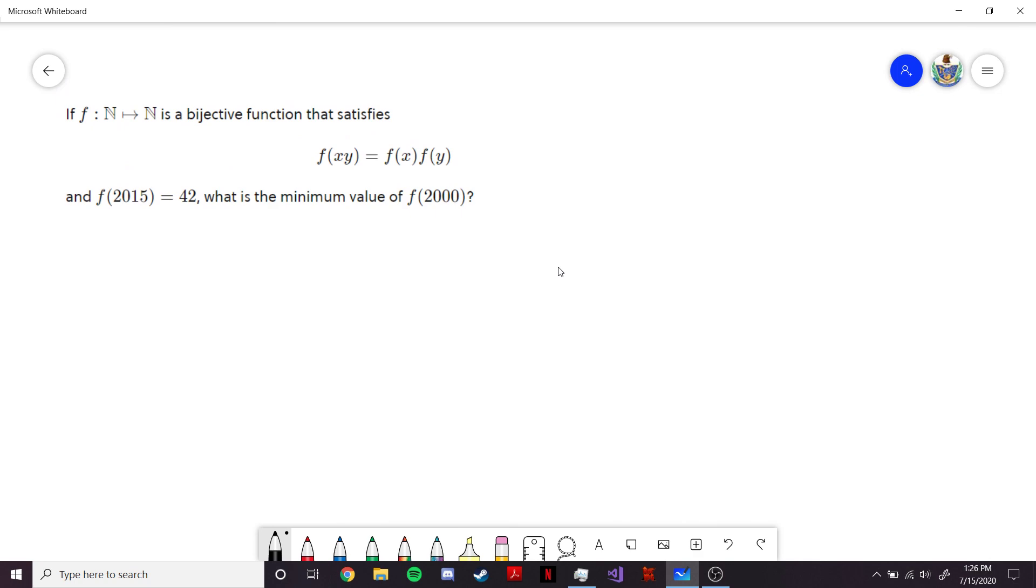So an arithmetic function just takes inputs in the natural numbers. And so here we're given a function from the natural numbers to the natural numbers. And we're given that it's bijective, which means that every natural number input has a unique natural number output, and every natural number output has a unique natural number input.